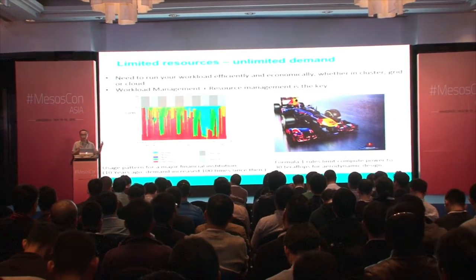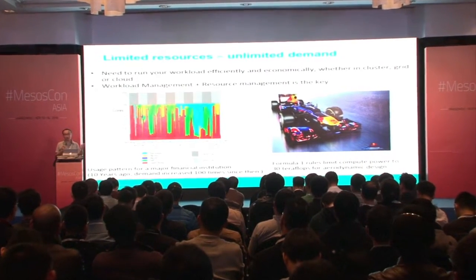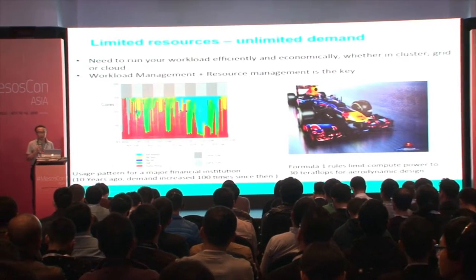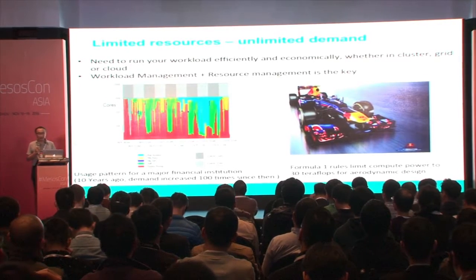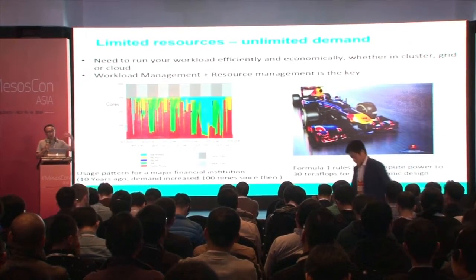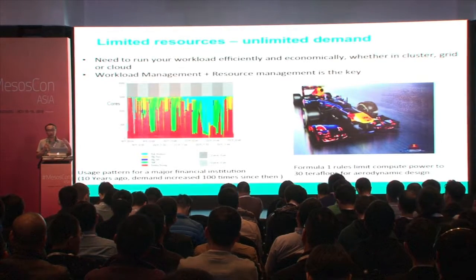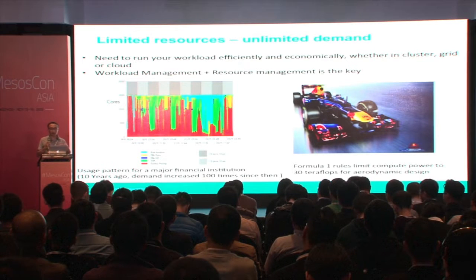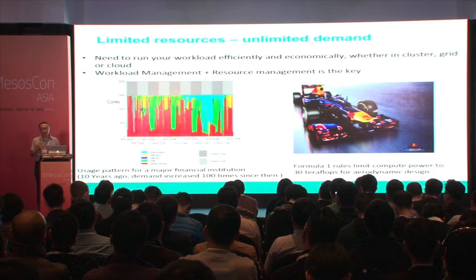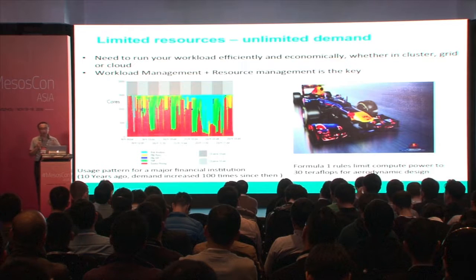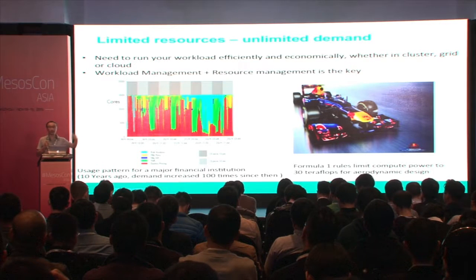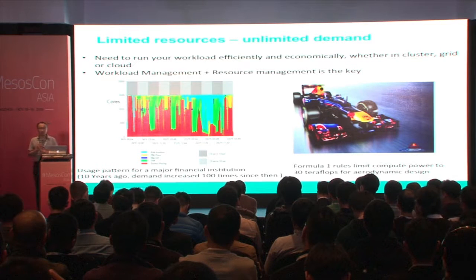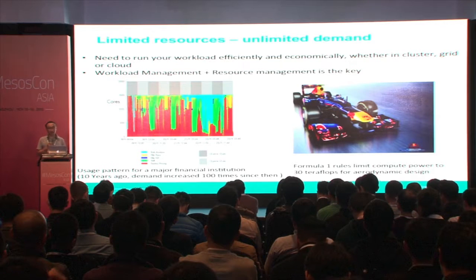How to do that? With two levels of scheduling — workload management and resource management working in conjunction. That will be the key. You need to be able to prioritize your work, dynamically respond to new demand in real time, do preemption, run many workloads in a shared environment so that you don't have silos and your utilization will be high. That's why two-level scheduling is the key, and we feel we have experience in this area — that's why we like to contribute.